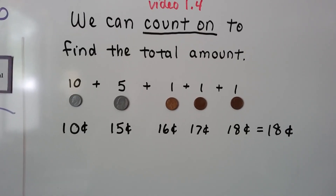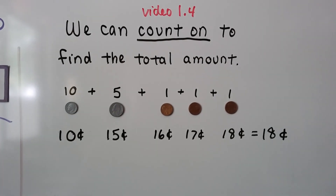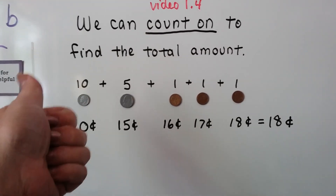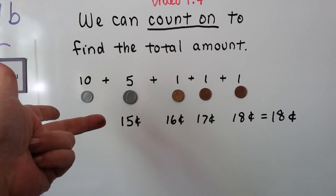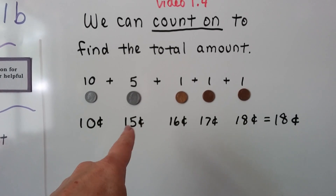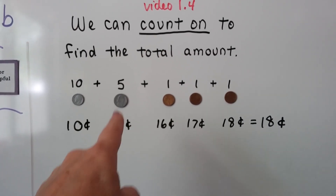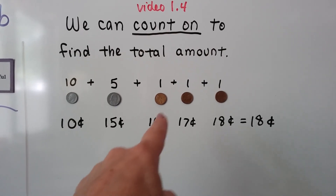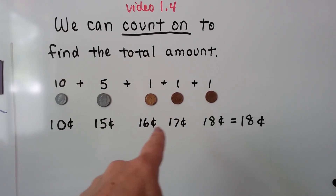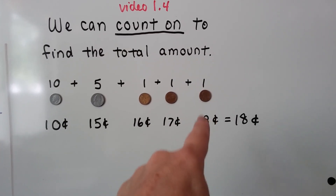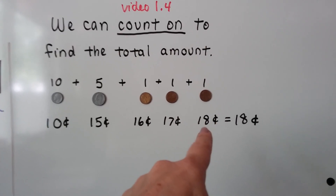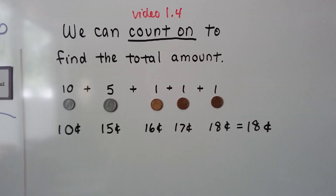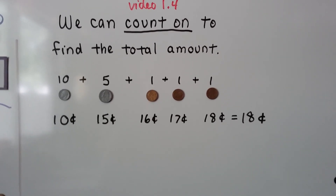We start with the ten, and we add the five: ten, eleven, twelve, thirteen, fourteen, fifteen. So now we're at fifteen cents. We add one — now we're at sixteen. We add another one — now we're at seventeen. We add another one — now we're at eighteen cents, and that's our total. We found it by counting on.